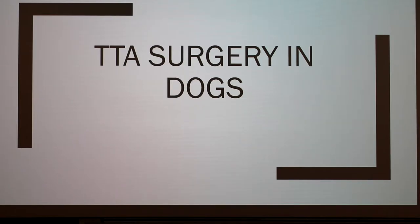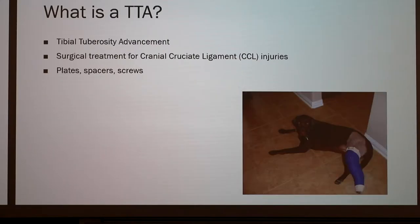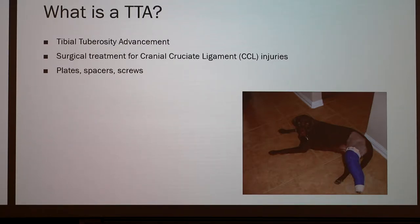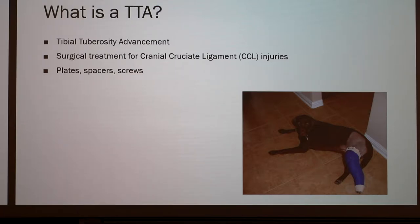So what is a TTA? It is a tibial tuberosity advancement. Tibial meaning the tibia bone, and tuberosity relates to the front edge of the tibia — specifically where the attachment of the ligament is going to occur. Advancement means to bring forward, so it's going to be bringing the front part of the tibia bone forward.